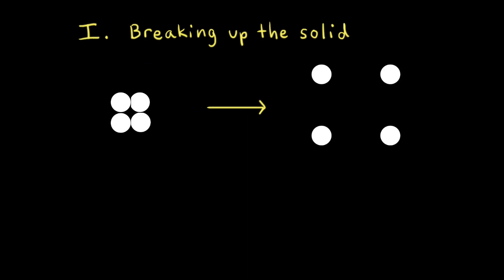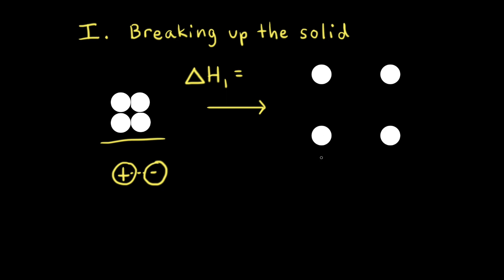We can think about the dissolution of a solid in three hypothetical steps. The first step involves breaking up the solid. Let's think about the change in enthalpy, delta H-1, for this first step. Solids are held together by attractive forces — for example, if we had an ionic solid, it would be ionic bonds or electrostatic interactions holding together the opposite charges. So if our goal is to pull apart or break apart the solid, it would take energy to overcome these attractive forces. Therefore, delta H-1 would be positive.